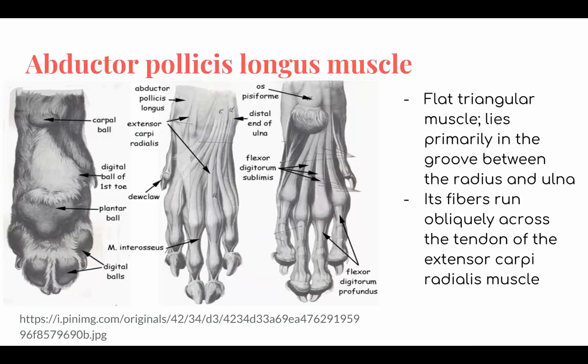It is a flat triangular muscle. It lies primarily in the groove between the radius and the ulna. It extends from the lateral border of the ulna towards the proximal end of metacarpals 1 and 2. The function is to extend the carpal joint and abduct the digit.